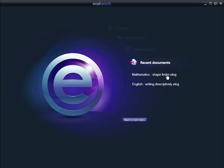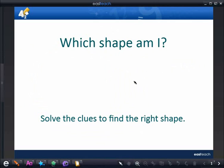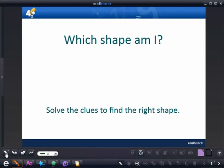Upon opening EasyTeach Next Generation, we can access our five most recent documents through the Recent Documents tab. We'll access a pre-made math activity called 'Which Shape Am I.'